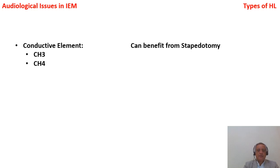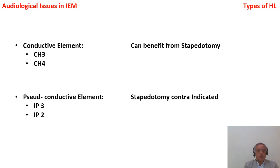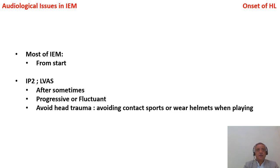Summary of hearing loss types: two conditions with a true conductive element are cochlear hypoplasia 3 and 4, which benefit from stapedotomy. Two conditions with pseudo-conductive element are IP3 and IP2 (plus large vestibular aqueduct), where stapedotomy is contraindicated. For large vestibular aqueduct and IP2, hearing loss can be progressive or fluctuant; advise parents to avoid head trauma and contact sports.